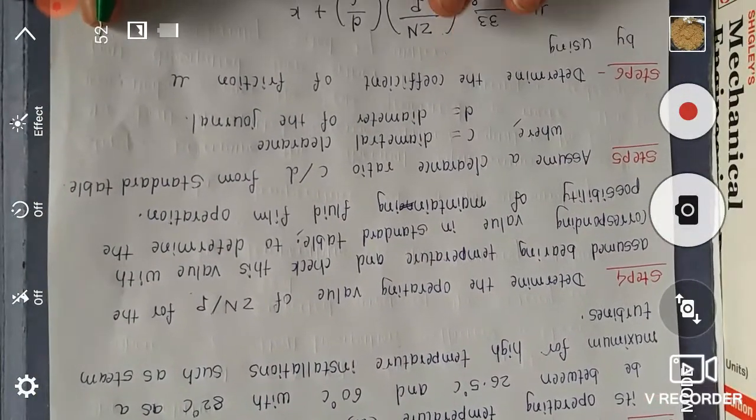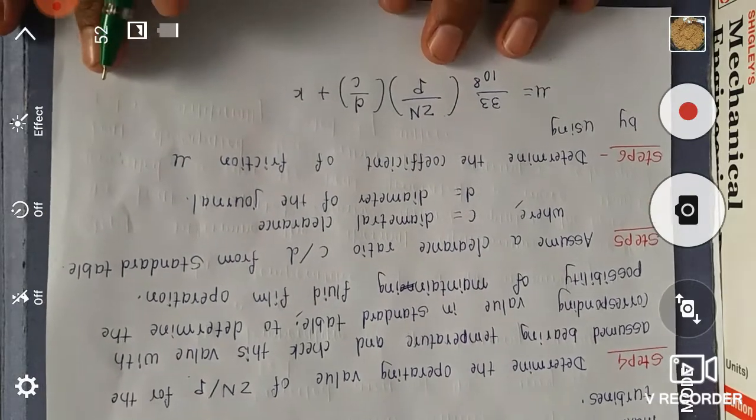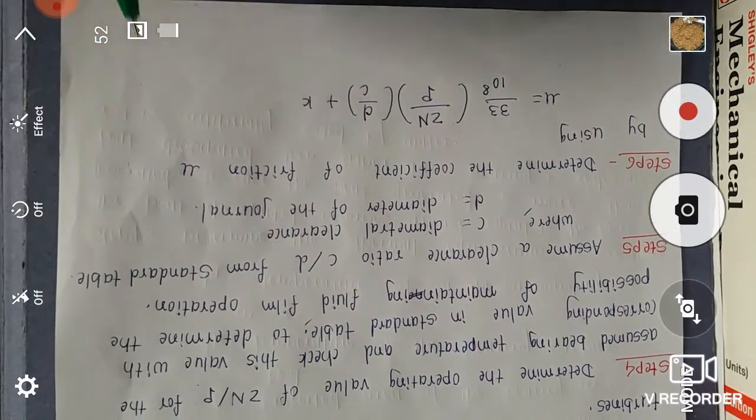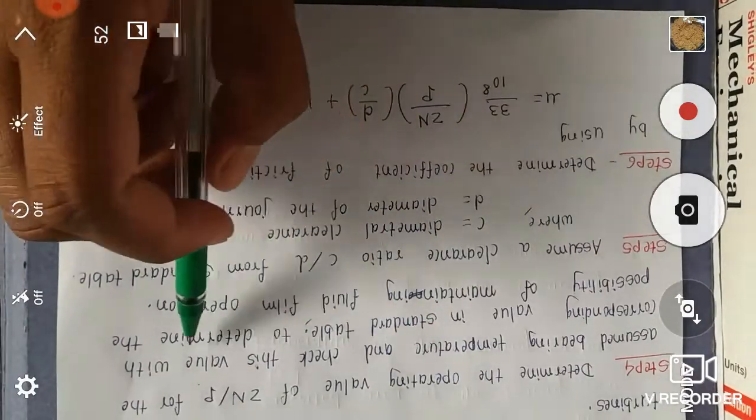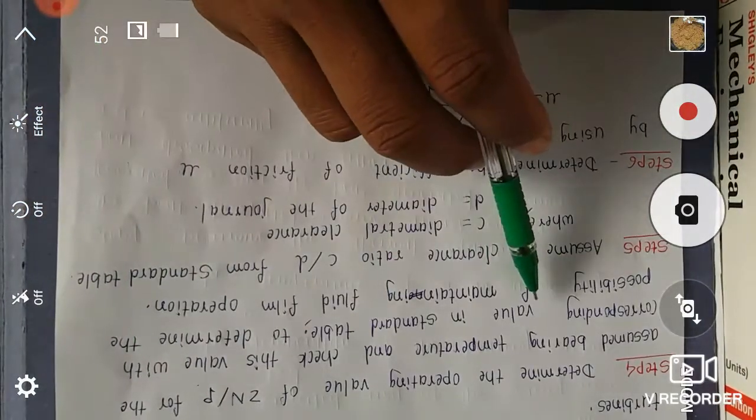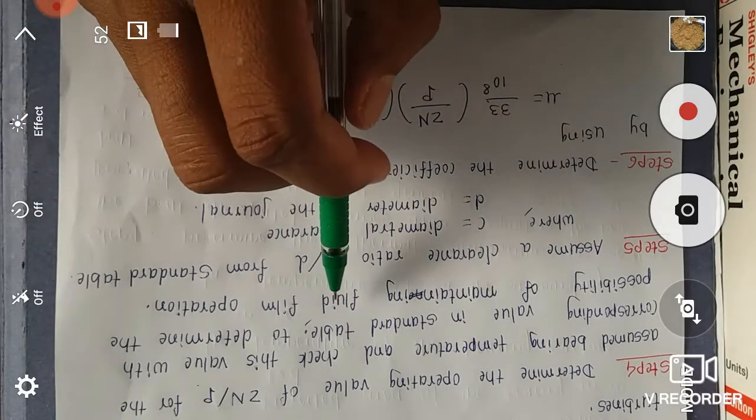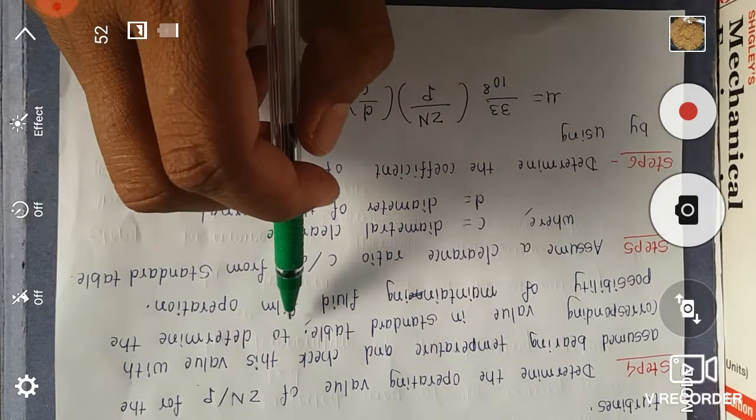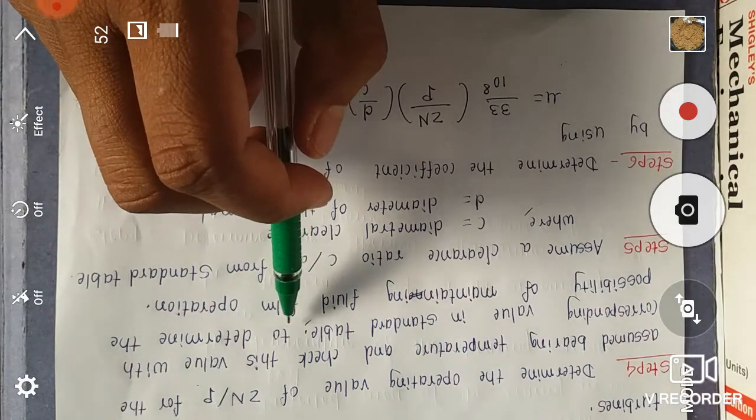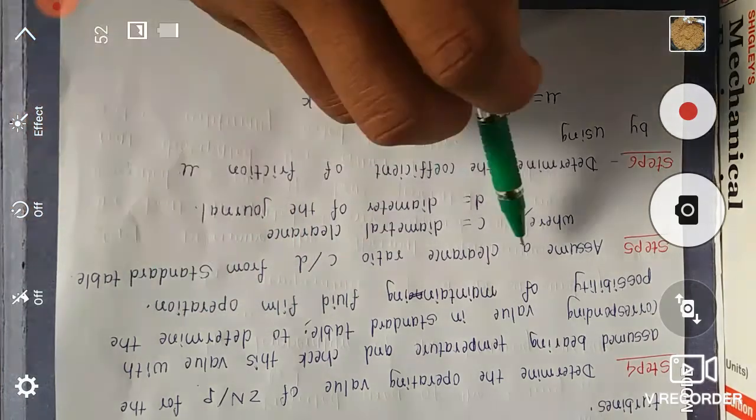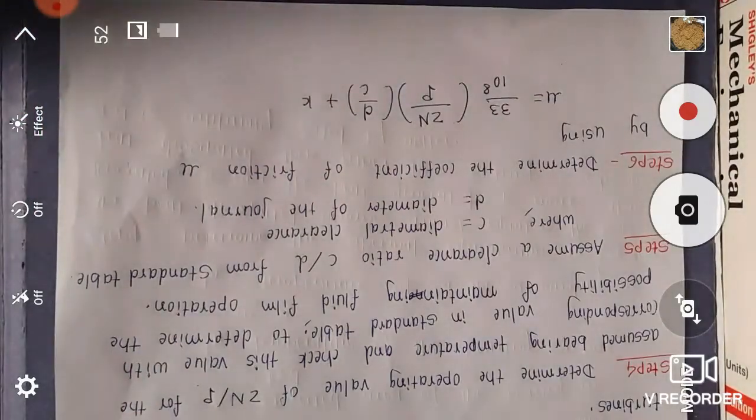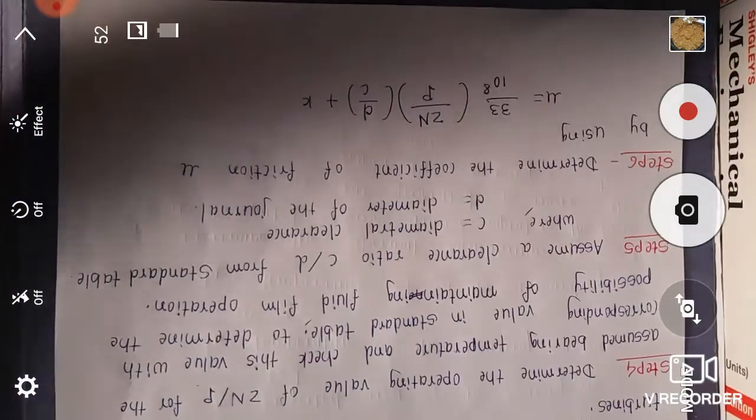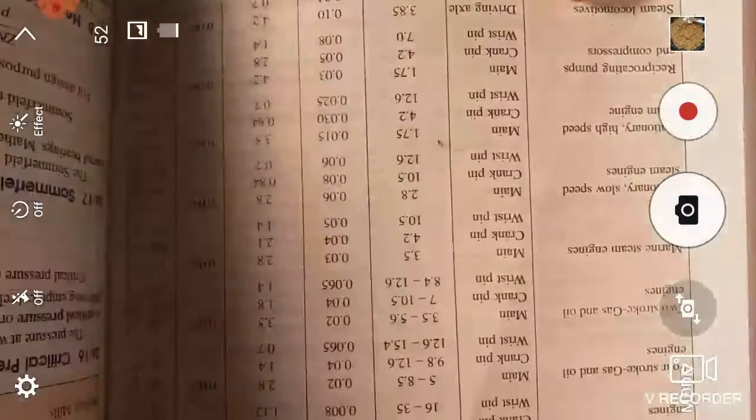Step 4: Determine the operating value of Zn by P for the assumed bearing temperature and check this value with corresponding value in standard table. Follow the same table to determine the possibility of maintaining fluid film operation.